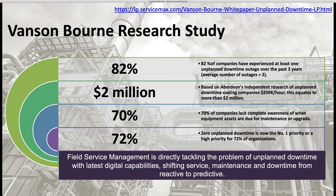70% of companies lack complete awareness of when equipment assets are due for maintenance or upgrades. Zero unplanned downtime is now the number one high priority for 72% of the organizations researched.